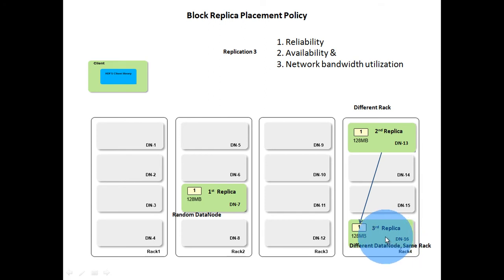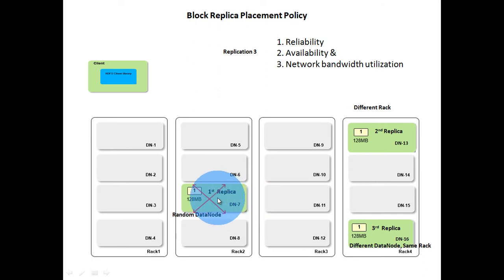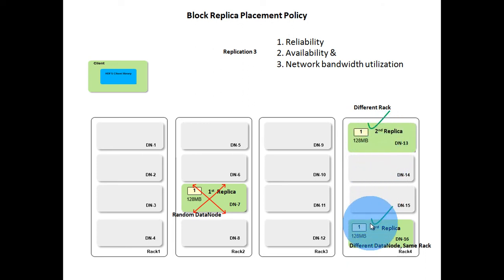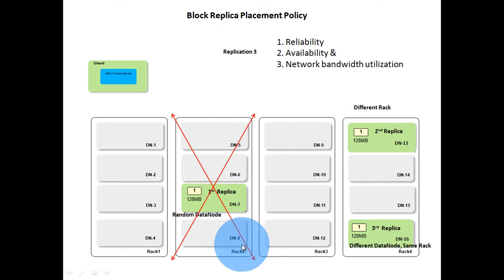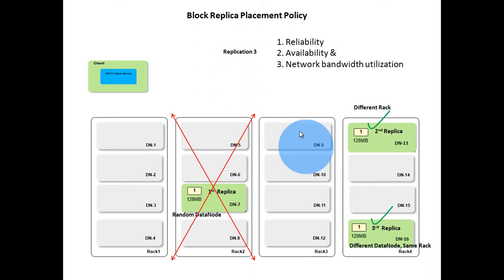So data is not just stored in a single machine; instead it is stored in different machines across the cluster. If data node 7 is down or its disk is corrupted, the block is still available in data node 13 and data node 16. Also, if rack 2 fails, the block is still available in rack 4.